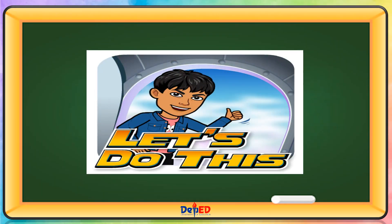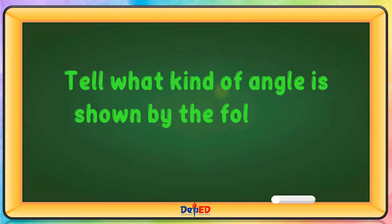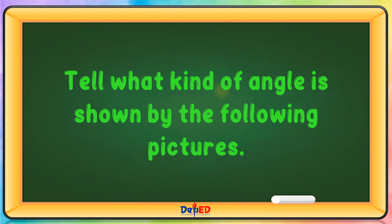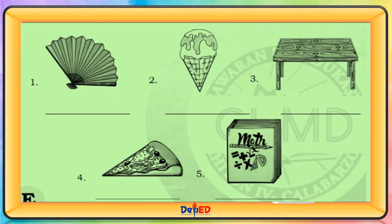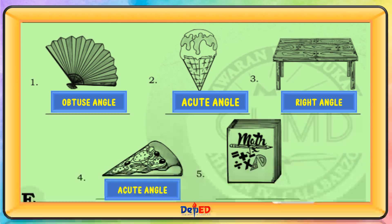Let's do this! Tell what kind of angle is shown by the following pictures. The first picture is an obtuse angle. The second picture is an acute angle. The third picture is a right angle. The fourth picture is an acute angle. And the fifth picture is a right angle.